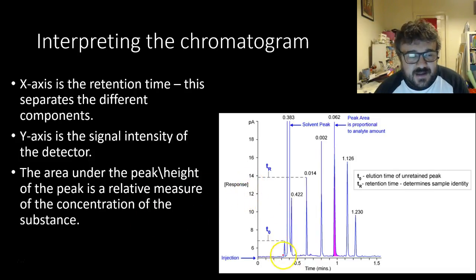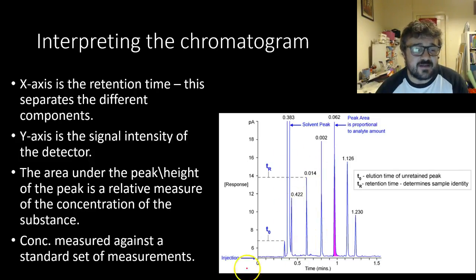The area under the peak, or the height of the graph, either one, is the relative measure of the concentration of the substance. So, the more area under the peak or the height of this graph, the more of that substance there actually is.